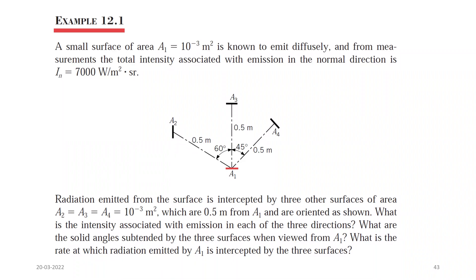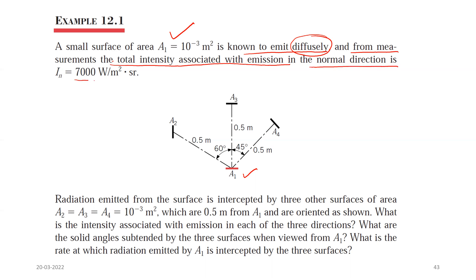Now we are going to do a numerical problem. A small surface of area a1 = 10⁻³ m² is known to emit diffusely. From measurements, the total intensity associated with emission in the normal direction is equal to 7000 W/m²·sr.